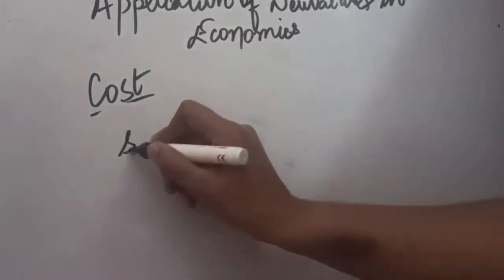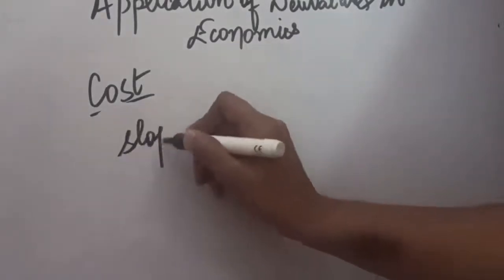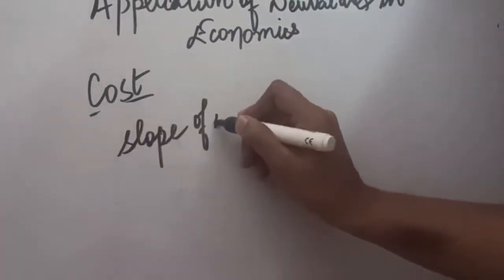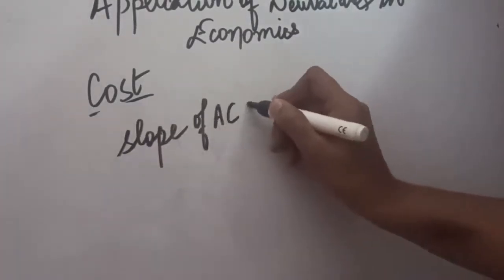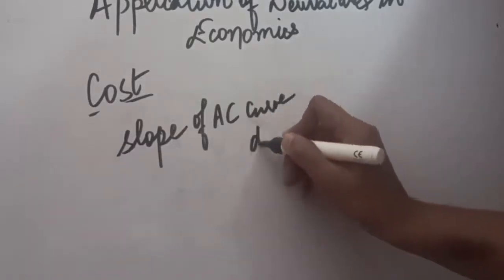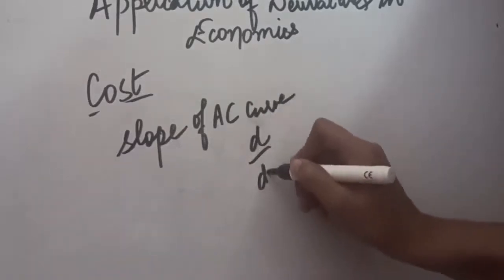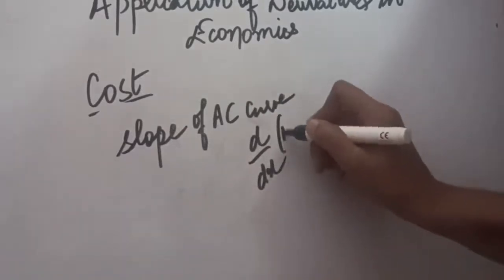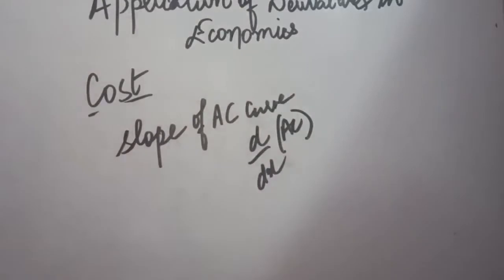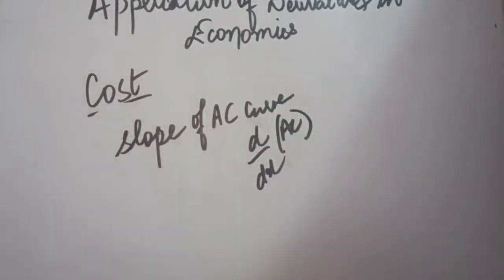You may also be asked to calculate the slope of the AC (average cost) curve. The slope of the AC curve is actually its derivative — you take the derivative of average cost, and that gives you the slope of the curve.